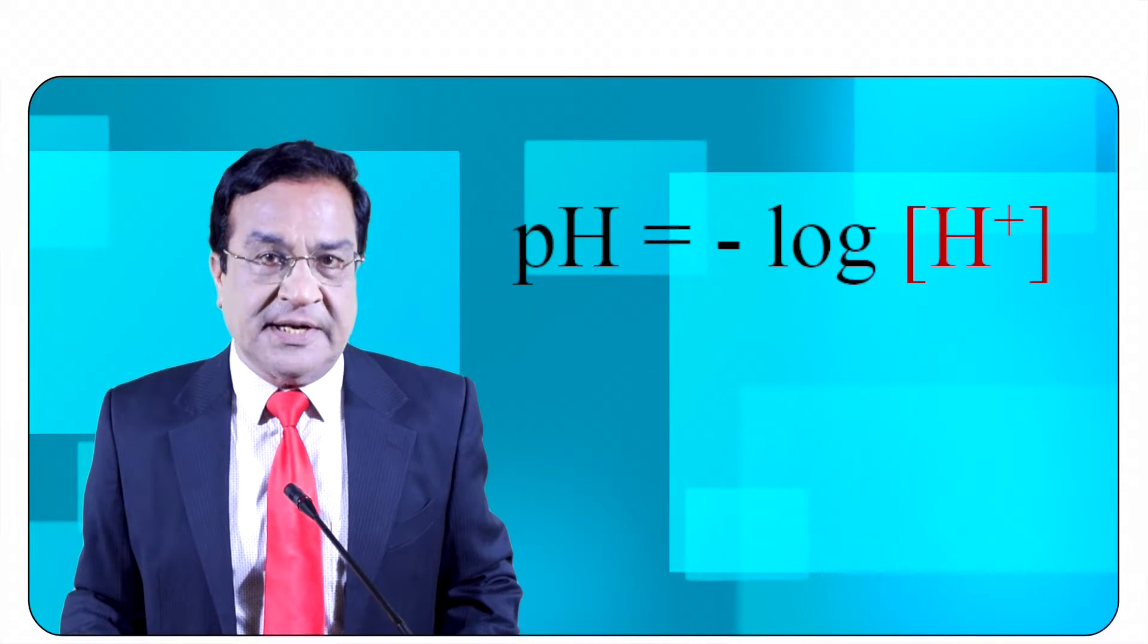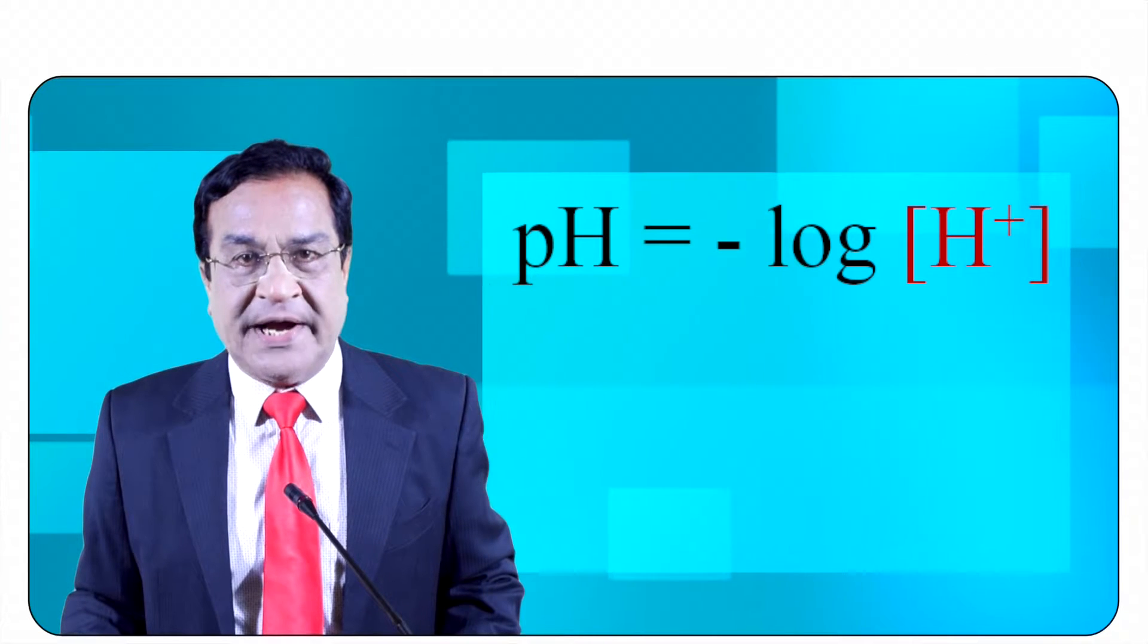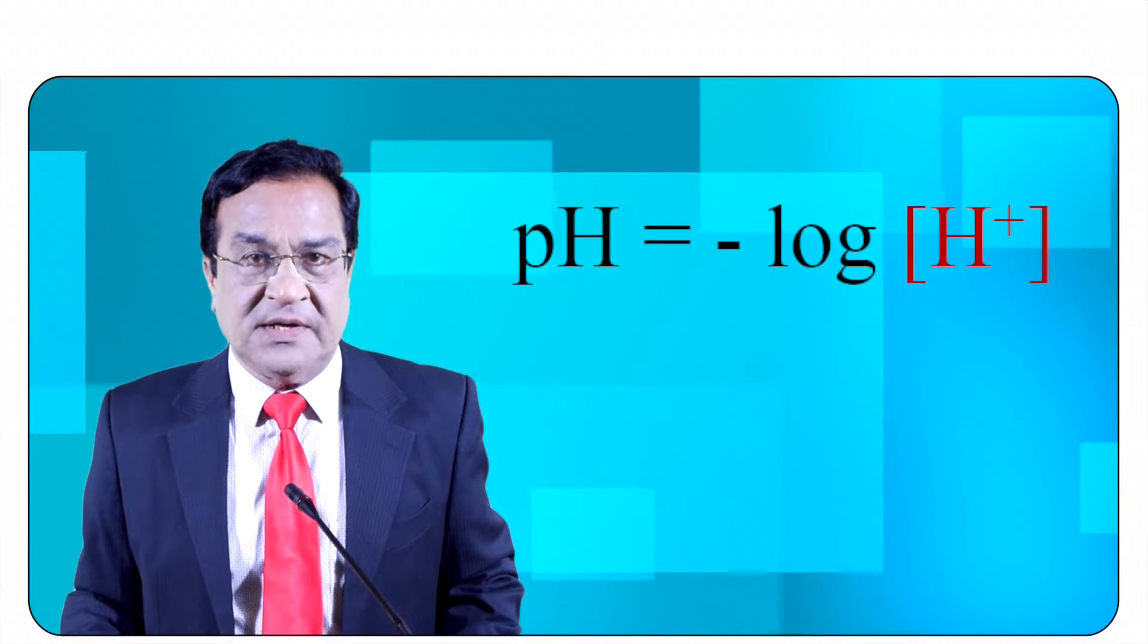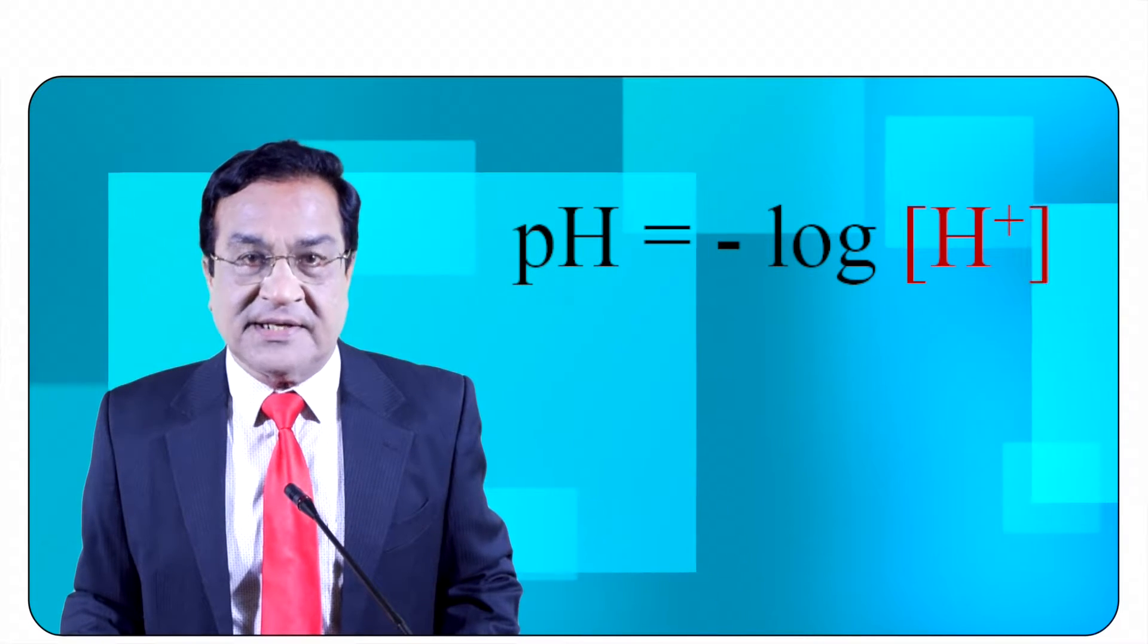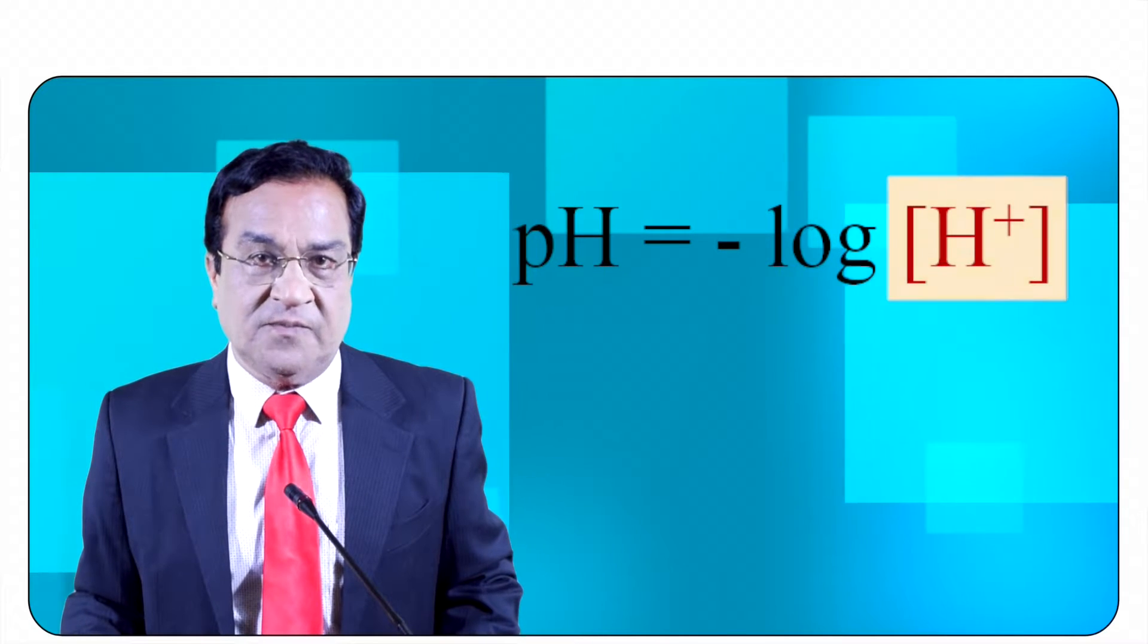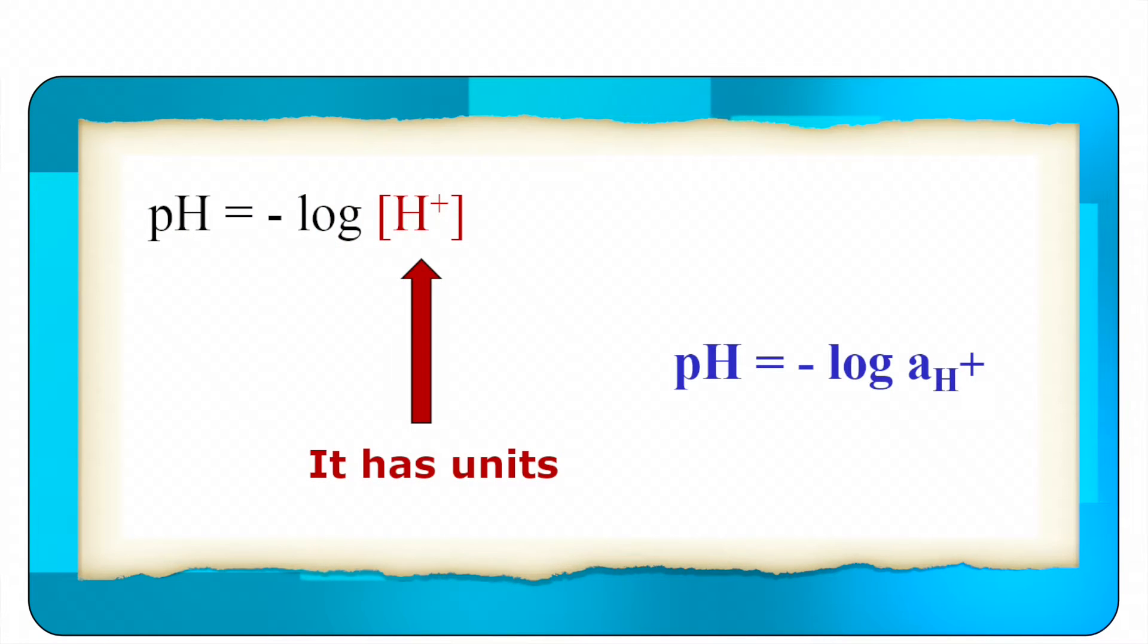Now pH is a number but if you look at the right hand side, it is minus log and concentration of hydrogen ion. Concentration of hydrogen ion has units. Now the problem starts here. You cannot take logarithm of a dimensional quantity. You can take log of a number only. You cannot take log of 100 gram or 100 meter.